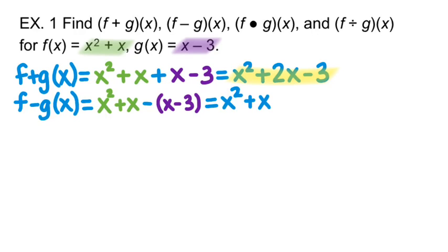So x squared plus x minus x plus 3. Now when we combine like terms, the x's in the middle are going to cancel out. So I'll be left with x squared plus 3.